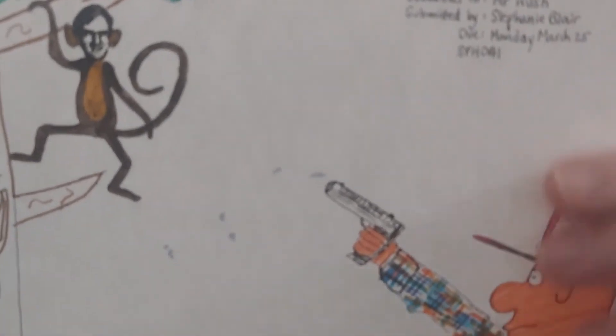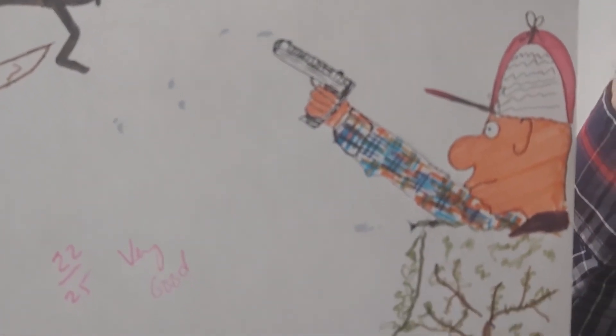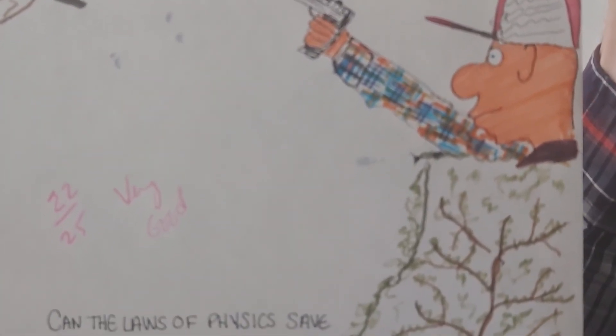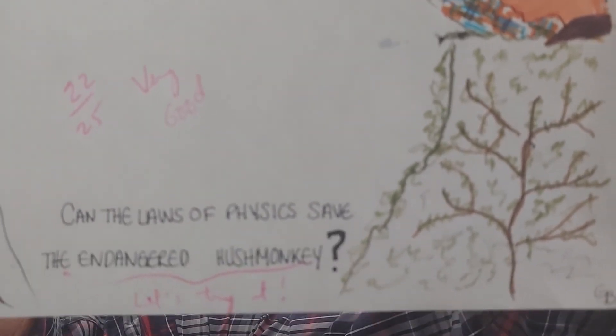There's the hunter aiming his gun at the monkey. He's going to shoot at the monkey just as the monkey lets go. The question is will the monkey get hit? Turns out yes, because they're both falling due to gravity.